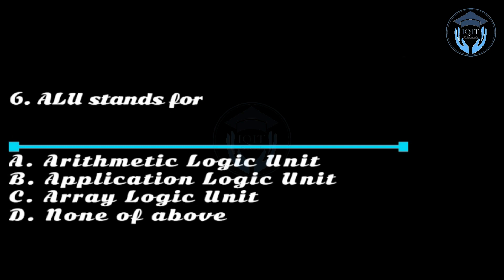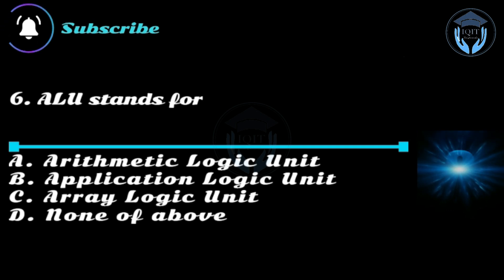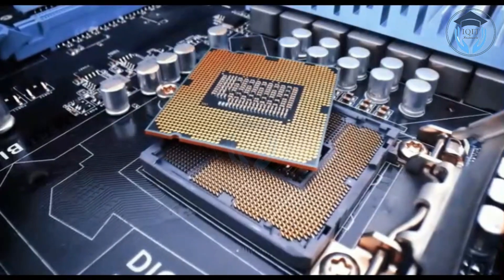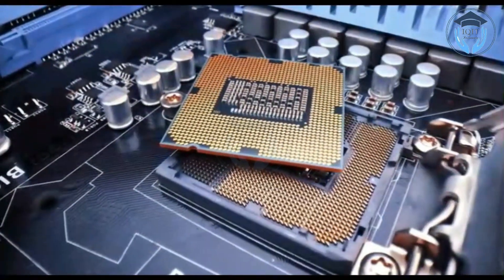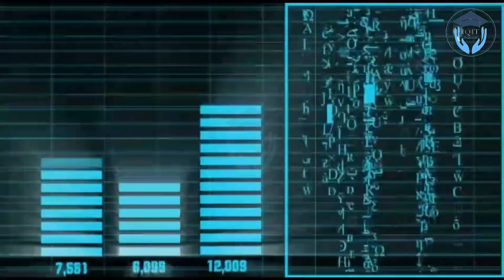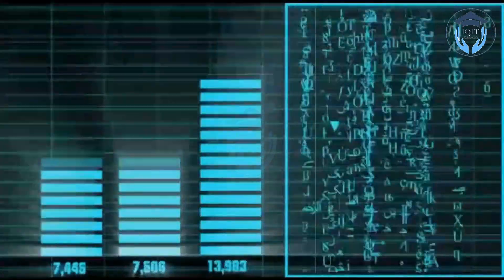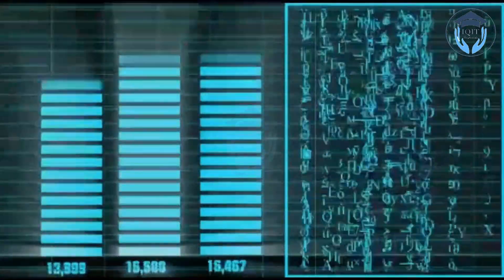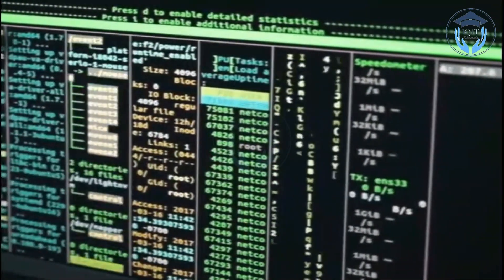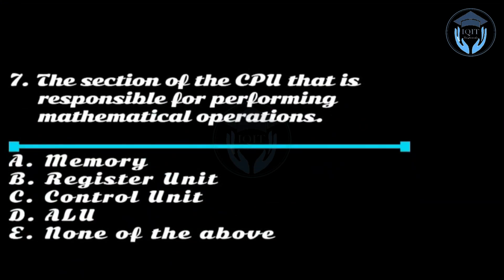Question six: ALU stands for — option A: Arithmetic Logic Unit. The ALU is a fundamental component of a computer processor that performs arithmetic and logical operations on binary numbers. It is responsible for operations such as addition, subtraction, multiplication, division, bitwise AND, bitwise OR, and comparison operations. It is a critical part of the CPU and is responsible for executing the instructions that make up a computer program.